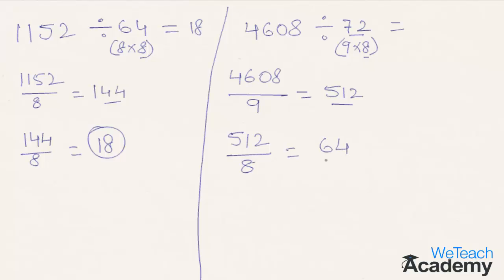So the result for 4608 divided by 72 is 64. Hope you understood the concept. The more you practice, you will see that your speed for solving these division problems is going up.